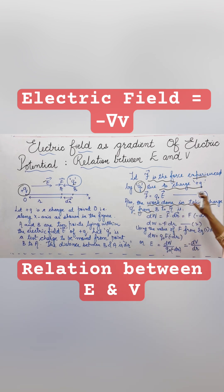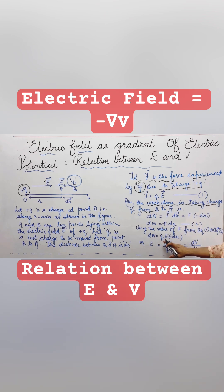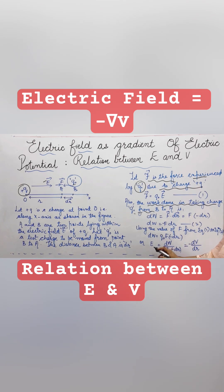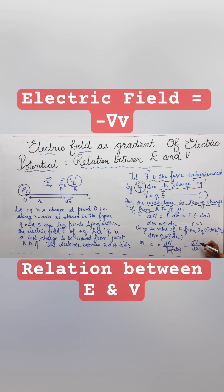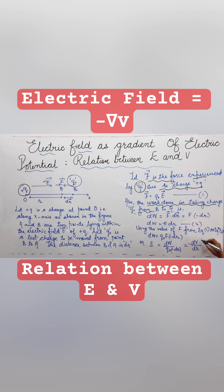Using the value of force from equation 1, the small work done equals Q0 times electric field E times the distance dr. Rearranging, the electric field equals the work done per unit charge per small distance. By definition, work done per unit charge is given by the potential. So the electric field E equals minus dV/dr — the negative of the potential gradient.